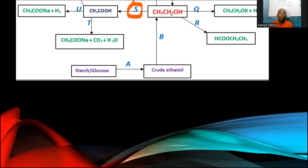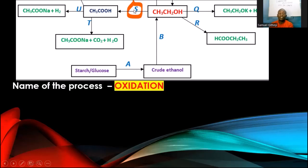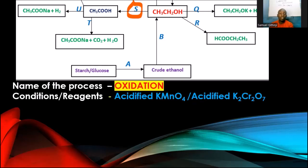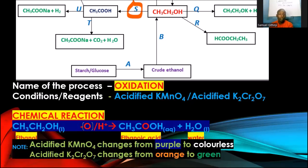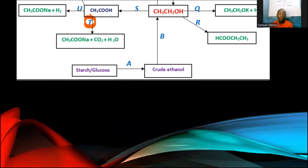Process S — ethanol being converted to ethanoic acid — is oxidation. The condition: an oxidizing agent, either acidified potassium manganate(VII) or acidified potassium dichromate(VI). Observations: acidified potassium manganate(VII) changes from purple to colorless; potassium dichromate(VI) changes from orange to green. Sometimes warming is necessary for the dichromate process.